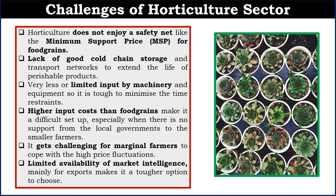Let's see the challenges of the horticulture sector. Horticulture does not enjoy a safety net like minimum support price for food grains — there is no concept of MSP here. Cold chain storage is also lacking, with very limited cold chain infrastructure for fruits and vegetables. There is very limited input by machinery and the input cost is also very high, making it difficult for small and marginal farmers. Price fluctuation is also very high. There is also limited availability of market intelligence, especially for exports.